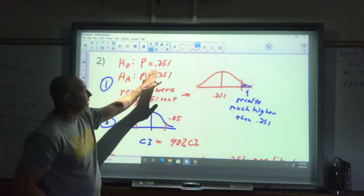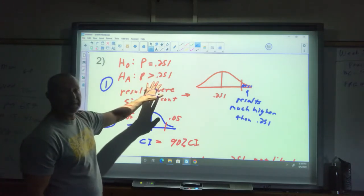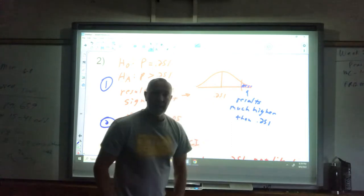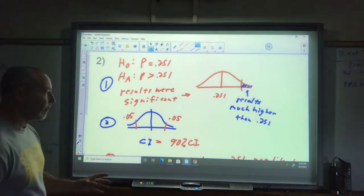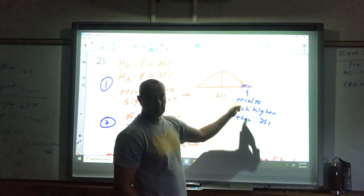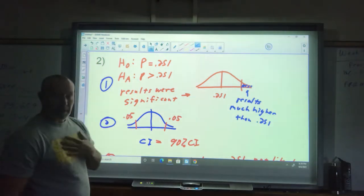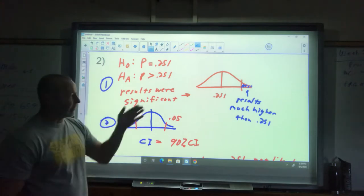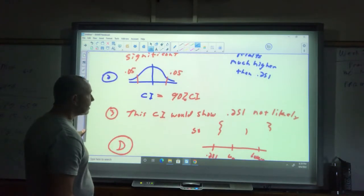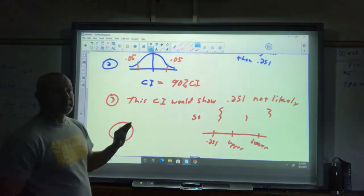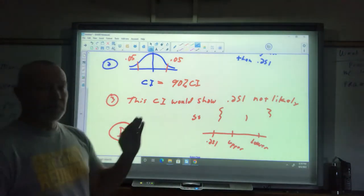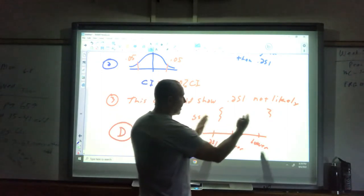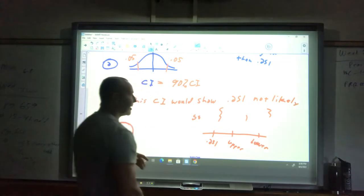Problem number two. Our null is that the proportion of gardening women is 0.251. The alternative is that it's greater than 0.251, and they got significant results. That means if here's my picture, the results ended up out there. They were far greater than the 0.251. Now this is 5%. That's your alpha level out there. For a confidence interval to have that same cutoff, that would be 5%. There'd be 5% on the other side as well, so it would be a 90% confidence interval. Since 0.251 was not an acceptable value, it was too far out to be plausible.